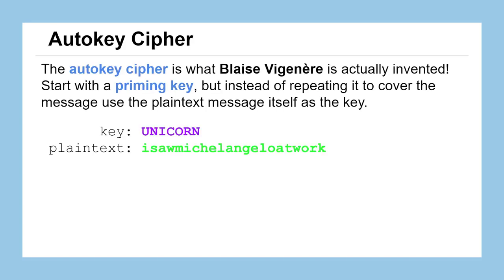That's where the auto-key cipher comes in. To do the auto-key cipher — which is actually the cipher that Blaise Vigenère invented — we start with a priming key, which is our keyword like before. In modern vocabulary, this priming key might also be called an initialization vector. It's part of a larger class of ciphers called stream ciphers. Instead of repeating the priming key over the plain text, we do something slightly different.